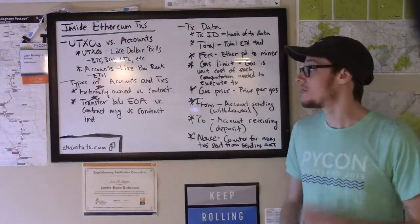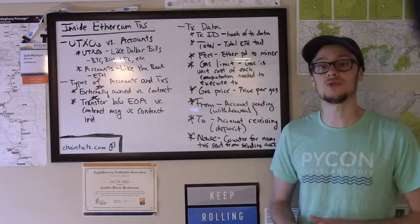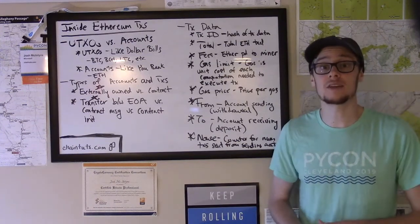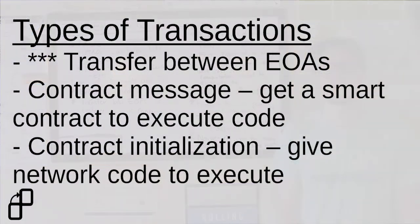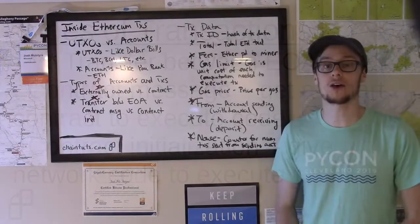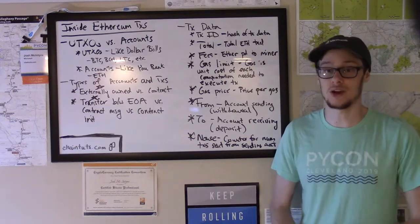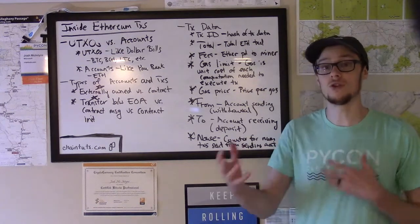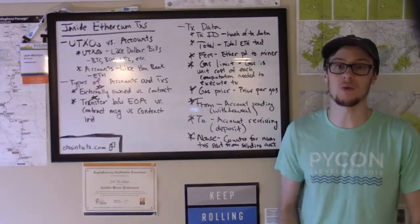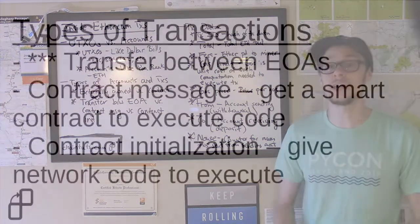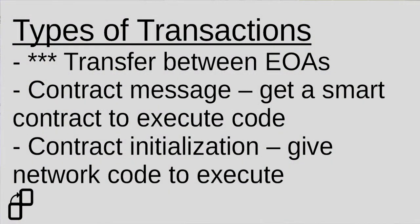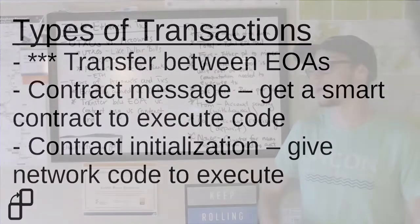In terms of the types of transactions: the first is a transfer of funds between two externally owned accounts — this is what you're doing if you send another person Ether or send yourself Ether from an exchange. There are also contract message transactions, used to kick off smart contract code already deployed on the network. You send that smart contract some funds as well as a message, which tells the contract code to execute, and the new state of that contract is saved on the Ethereum blockchain when the block is processed. Finally, there are transactions that initialize smart contracts by deploying the Ethereum smart contract code you want to run from future message transactions.